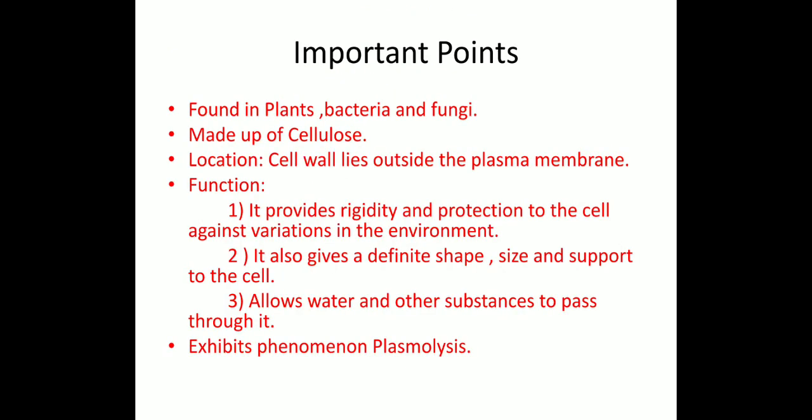Moving ahead to its important points: it is chiefly found in plants, bacteria, and fungi. It is made up of cellulose — that is very important. Its location is just outside the plasma membrane. Its function is to provide rigidity and protection to the cell against variations in the environment, so that the cell does not lose its structure. It gives a definite shape, size, and support to the cell, and it also allows water and other substances to pass through it.